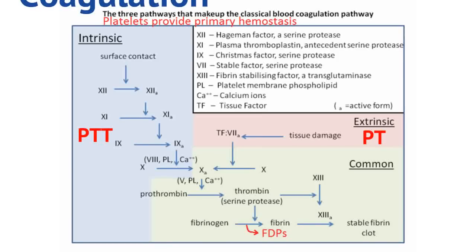Before talking about the specifics of DIC, let's talk about coagulation. Coagulation is split up into primary hemostasis and secondary hemostasis. Primary hemostasis is when there's damage to tissue or blood vessels and platelets stick to this damage, creating a primary clot. The clot is strengthened by secondary hemostasis, and this involves the intrinsic, the extrinsic, and the common pathway.